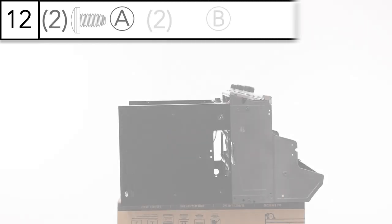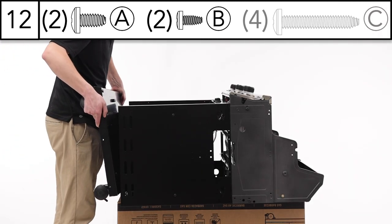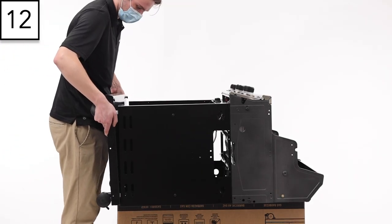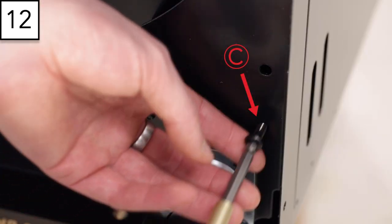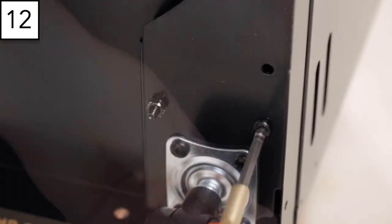Step 12: Secure the base to the cabinet using the hardware shown. The four longer bolts secure the base to the side panels.